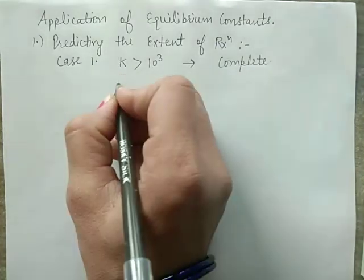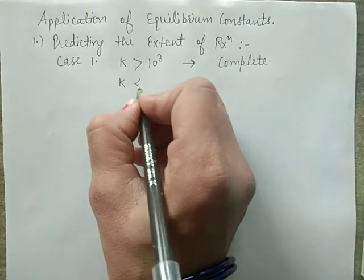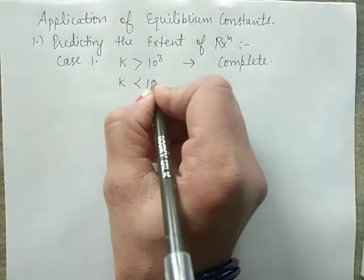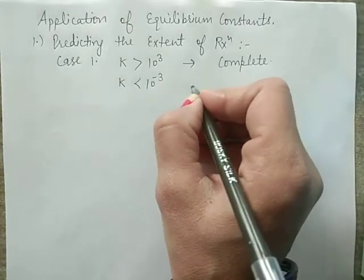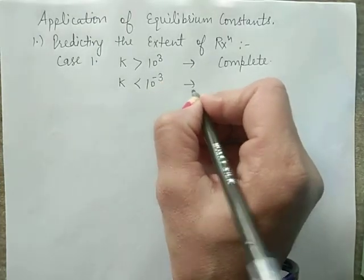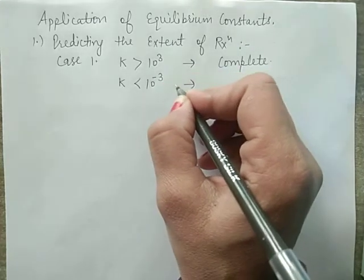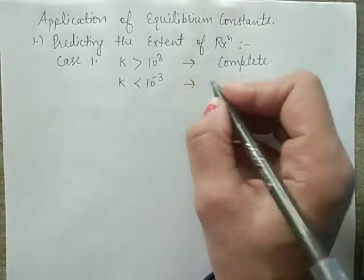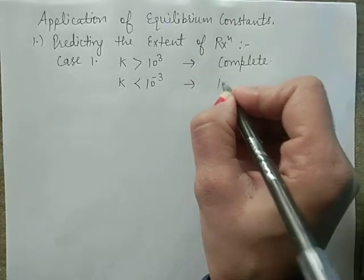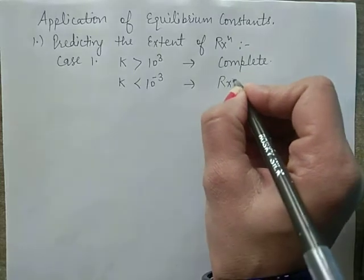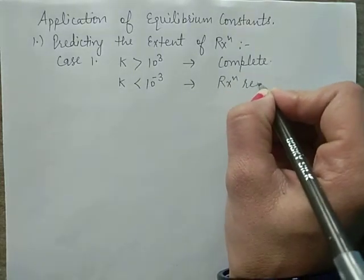If the K value is less than 10⁻³, then it means reactants predominate — the reaction occurs rarely.